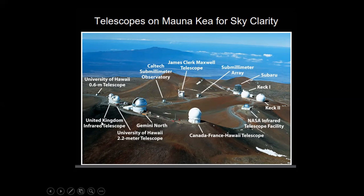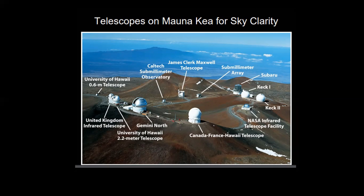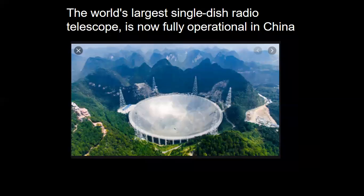Among them is the United Kingdom Infrared Telescope, and this part belongs to the University of Hawaii. There is also the NASA Infrared Telescope Facility and the Canada-France-Hawaii Telescope. It is a combination of work from around the world.